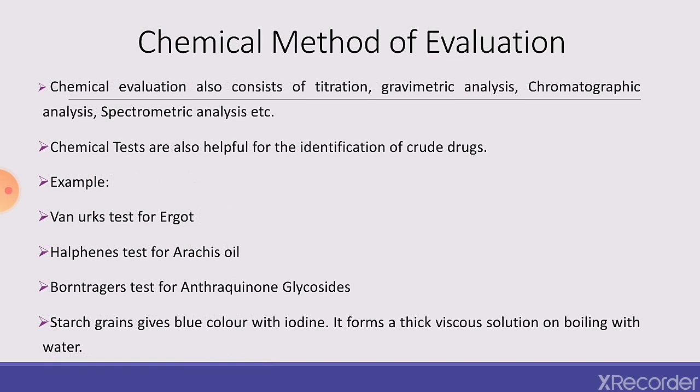In chemical evaluation, different methods are used such as titration, gravimetric analysis, chromatographic analysis, and spectrometric analysis. Preliminary phytochemical screening is a qualitative chemical evaluation which indicates the spectrum of chemical constituents present in a plant. Successive solvent extraction of crude drug is carried out with different solvents such as petroleum ether, benzene, solvent ether, chloroform, ethanol and water in succession.